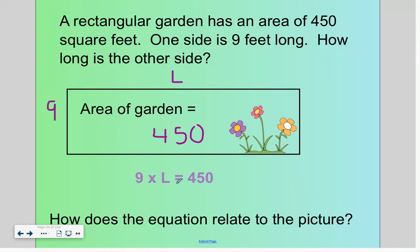Well, I know that nine times five is 45, so nine times 50 would give us 450. That means our L, the value of L, is equal to 50 feet because 50 times nine is 450.